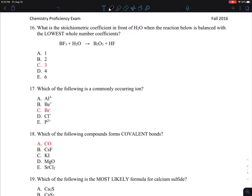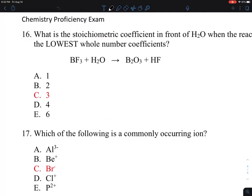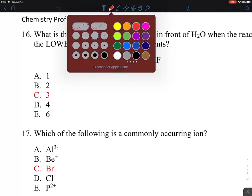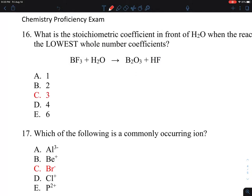Okay, so this is number 16, and they show this unbalanced chemical reaction shown up here. And so we need to balance it, and the question is specifically asking about what is the coefficient that goes in front of H2O.